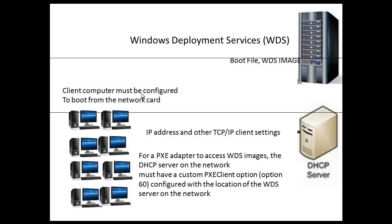So, under what circumstances would we want that to occur? Let us say that we wanted to deploy maybe 50 or 100 machines, or a whole set of client machines. We wanted to deploy the operating systems to these machines, or we wanted to deploy an image that we have already set up. We do that with a role in Windows Server 2012 called WDS, Windows Deployment Services.